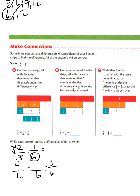We know that we can simplify 3 sixths by dividing both numerator and denominator by 3, and that leaves us with 1 half. So our answer is either 3 sixths or 1 half.